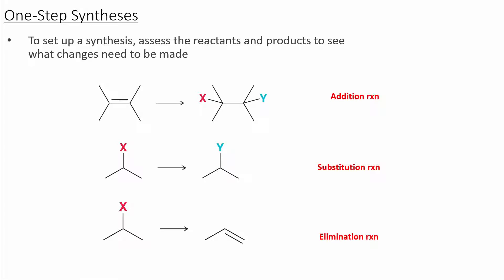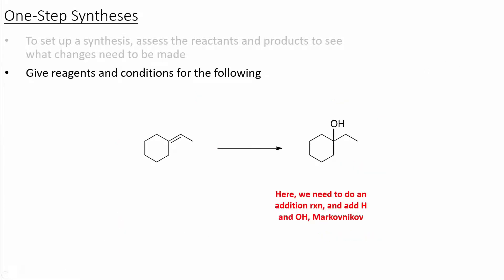We now have enough tools to begin thinking about synthesis. In synthesis, we analyze different starting materials and products and try to figure out a route to convert one molecule into another. The three major reactions we have currently learned are the addition reaction, the substitution reaction, and the elimination reaction. We first analyze the starting material, then the product, and think about what conditions and reagents will be needed.